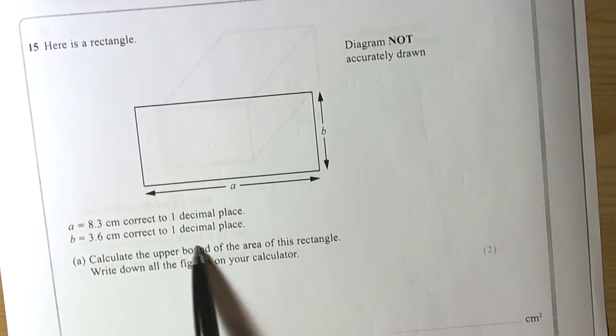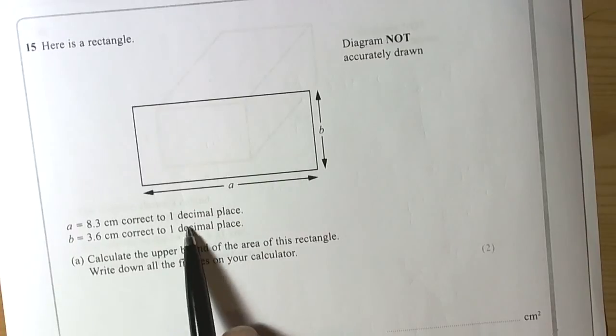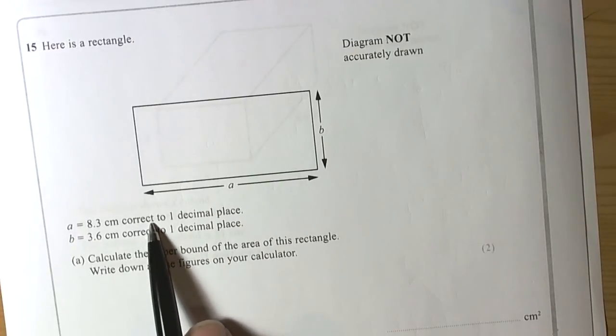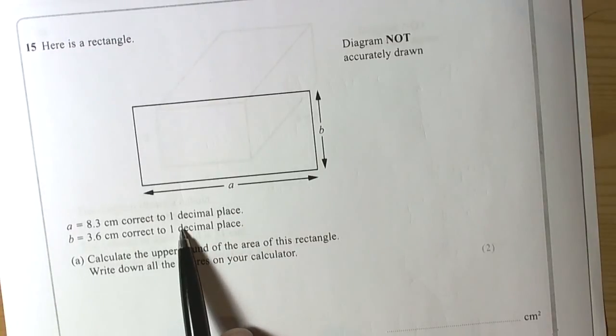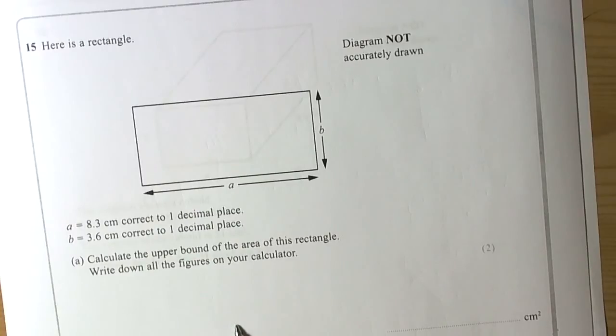But they quite often might not say those words and therefore you've got to kind of work with what the information tells you. Correct to one decimal place, nearest to one tenth, that kind of stuff. Then they're shouting out at you, use the principle of upper bounds and lower bounds.